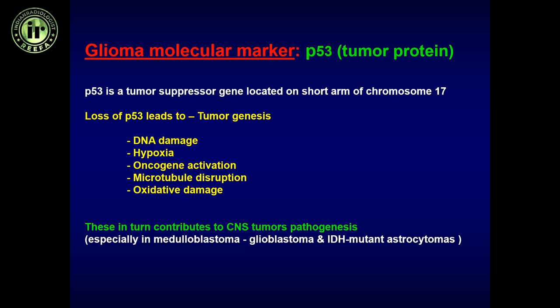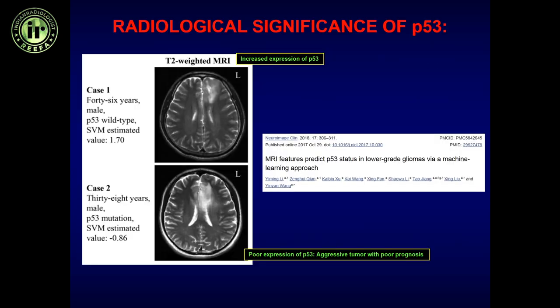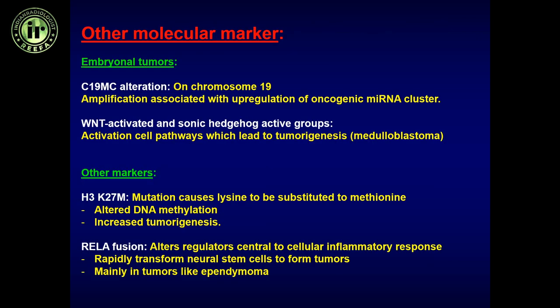The last most important tumor marker is P53, a tumor suppressor gene. Its presence decreases tumorigenesis, whereas its loss causes DNA damage, hypoxia, oncogenic activation, and promotes tumor occurrence. Increased expression of P53 results in a more localized tumor with a narrow zone of transition and less spread — a better prognostic factor. Post-treatment signal change in a patient with increased P53 expression is more likely treatment change. Poor P53 expression leads to a more aggressive tumor that spreads into white matter, with overall poor prognosis, and post-treatment signal change more likely represents recurrent tumor.